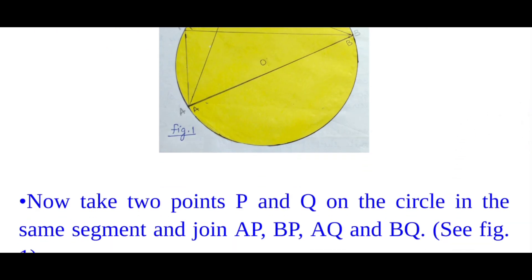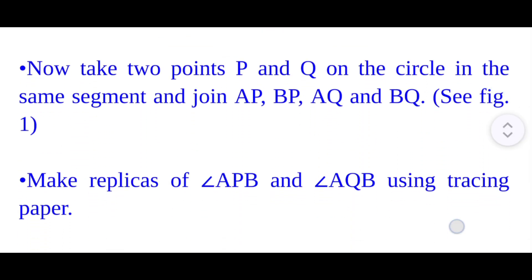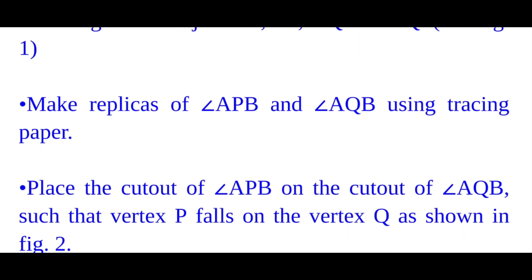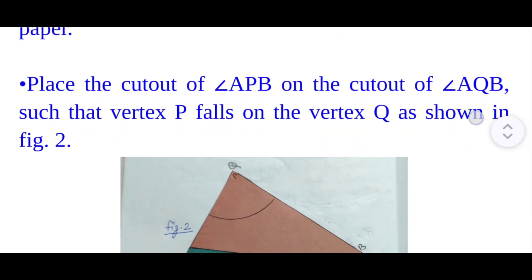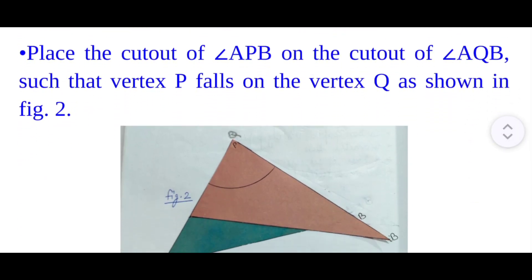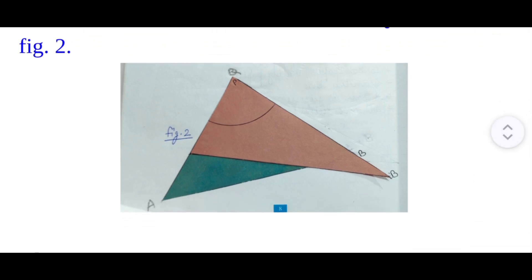Next step: take two points P and Q on the circle in the same segment and join AP, BP, AQ, and BQ. Next step: make replicas of angle APB and angle AQB using tracing paper. Next step: place the cut-out of angle APB on the cut-out of angle AQB such that vertex P falls on the vertex Q, as shown in figure 2.